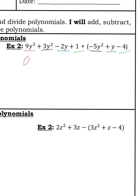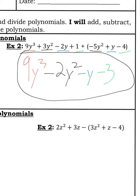So let's see here. 9y to the third plus nothing, 3y squared minus 5y squared. That would be negative 2y squared. Negative 2y plus a y is going to be negative y. And 1 minus 4 would be negative 3 because this green color is pretty light. But that's the final answer there.